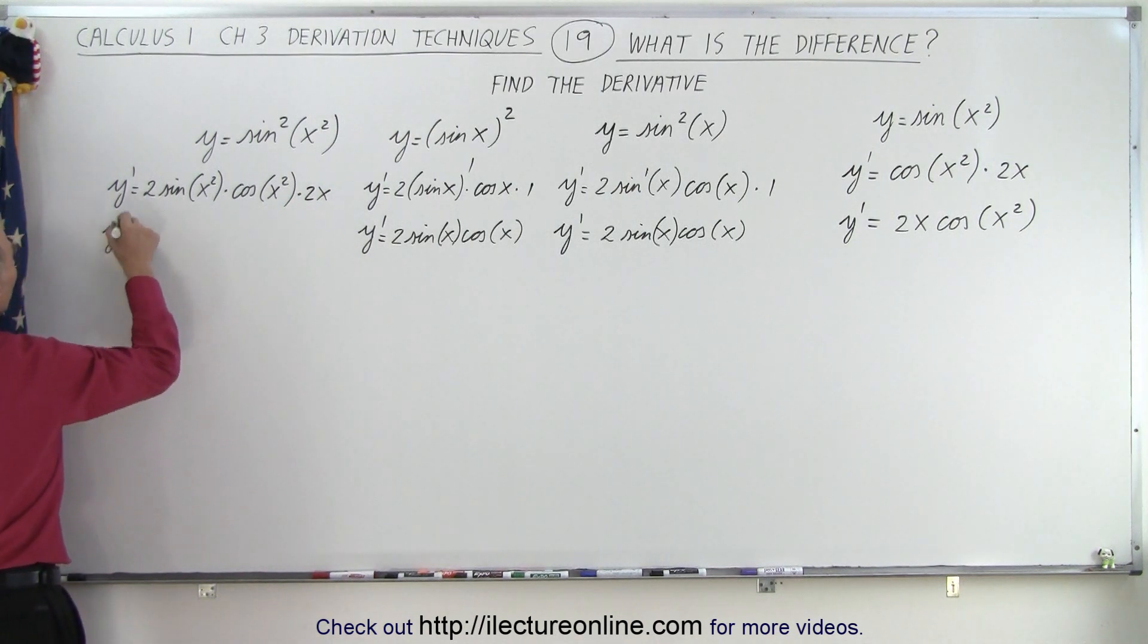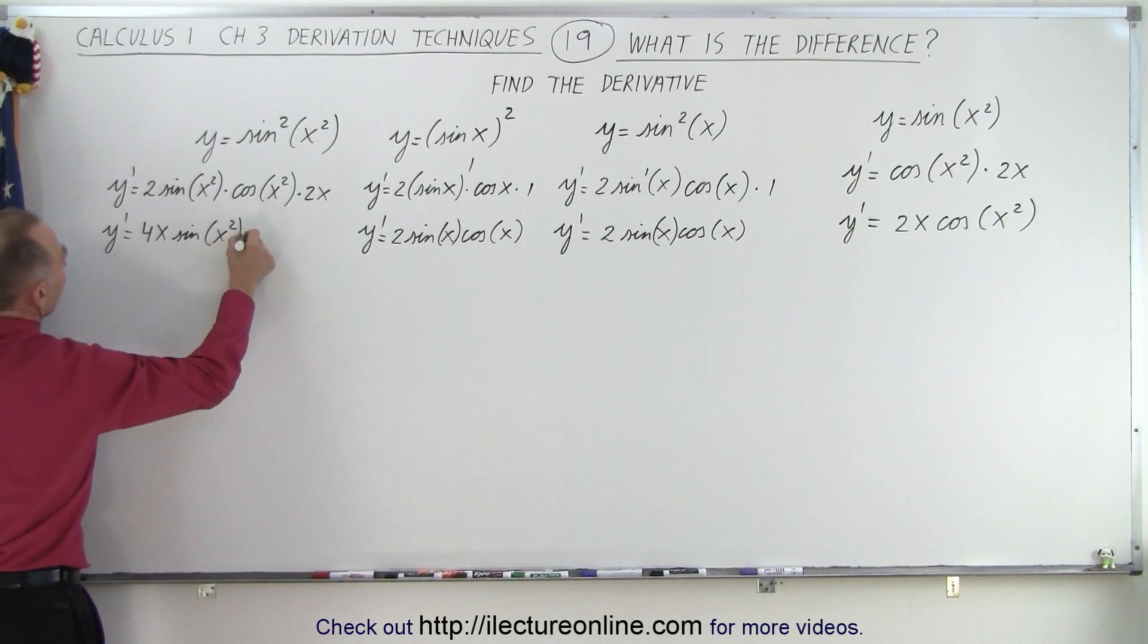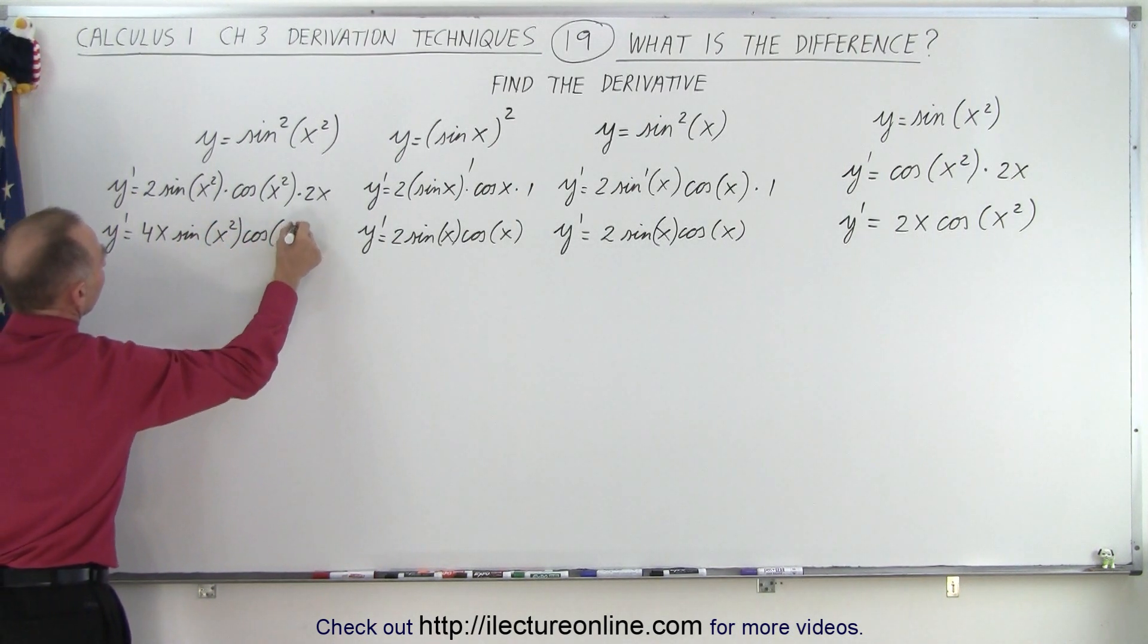And then when we simplify that, y prime becomes 4x times the sine of x squared times the cosine of x squared.